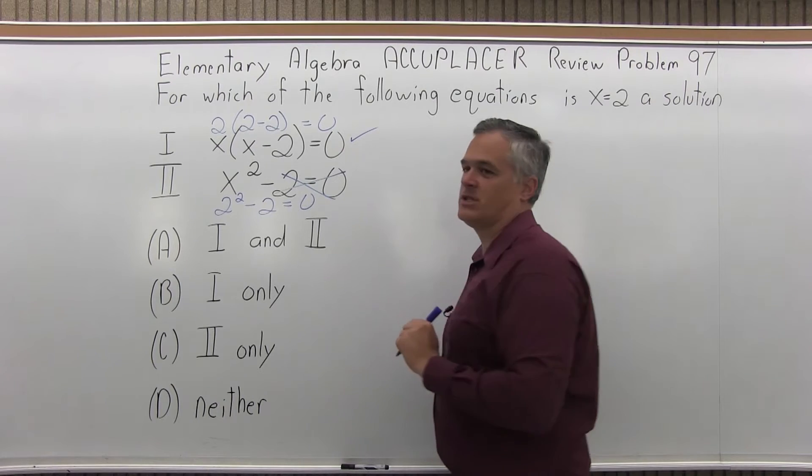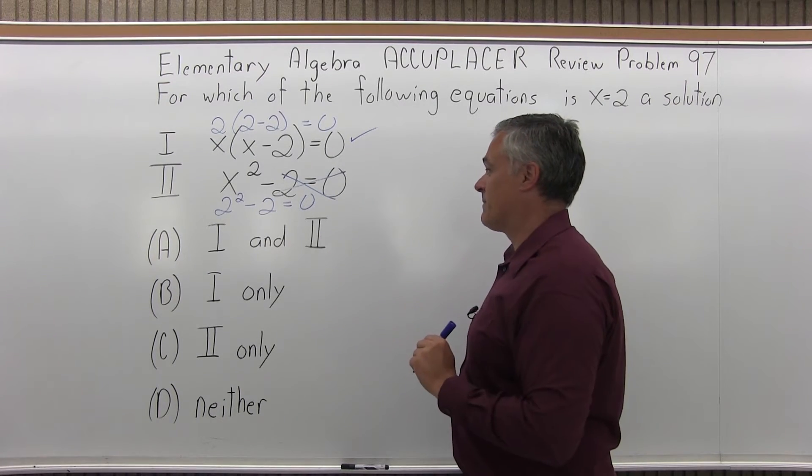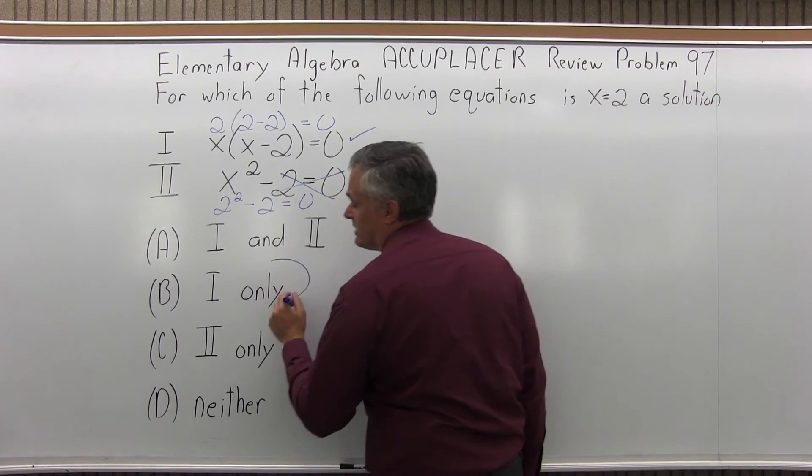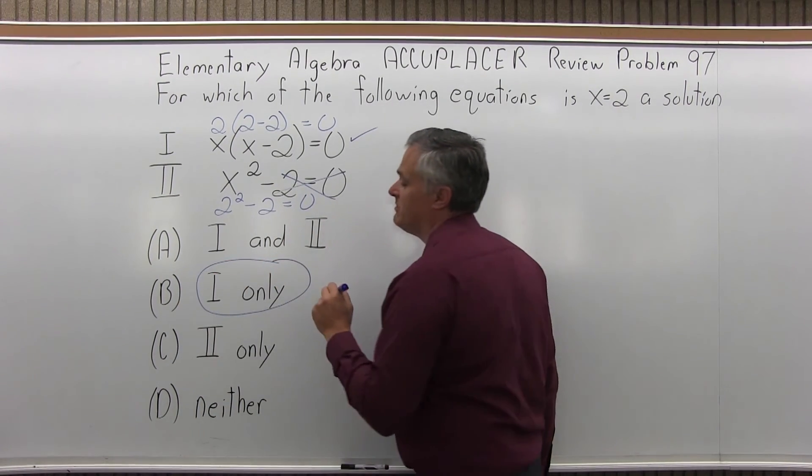Does not work for equation 2. So it only works for number 1, which is option B. So the answer to number 97 is option B, equation 1 only.